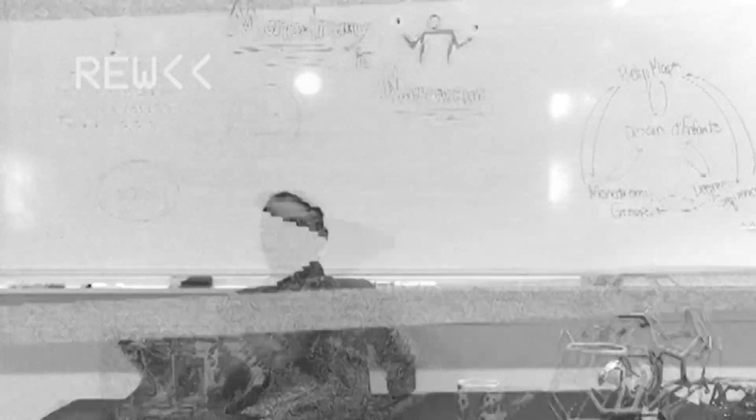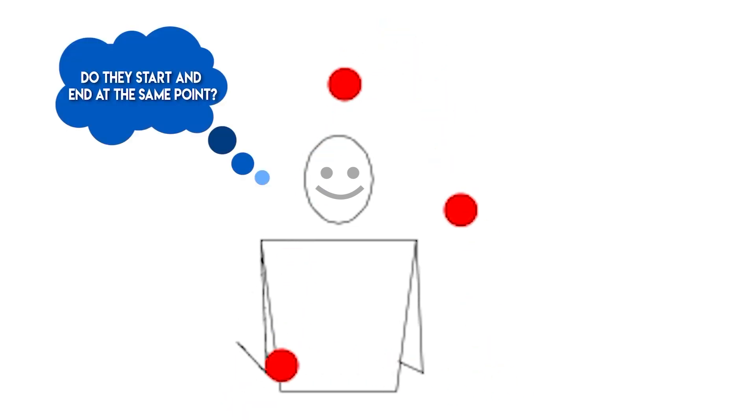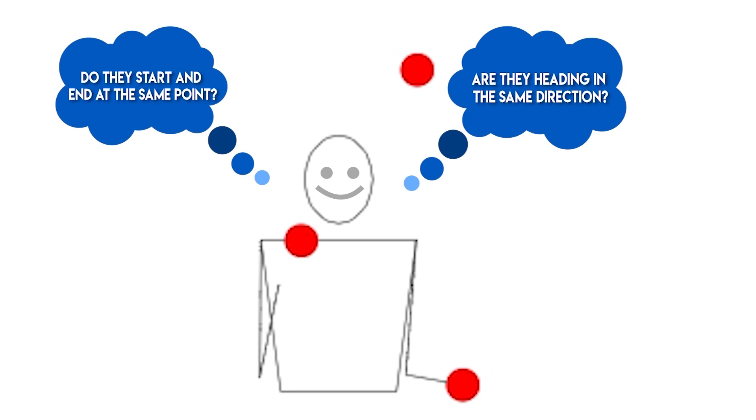Previously on Primetime, Brian mentioned that juggling has a place in mathematics. Let's take a look at this juggler and see what that means. Follow the path of each ball. Do they start and end at the same point? Are they heading in the same direction? These are just a couple of questions a mathematician would ask to understand the motion.